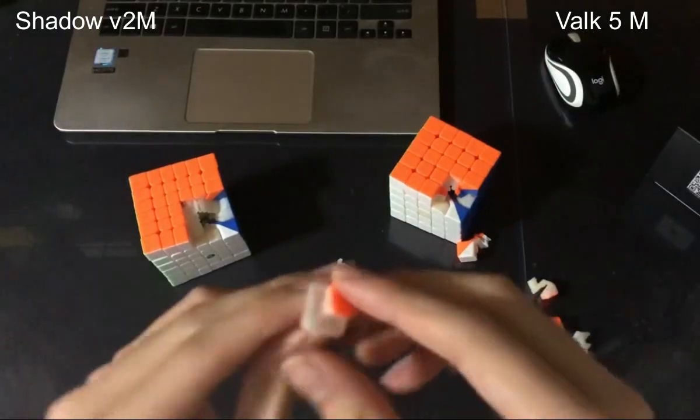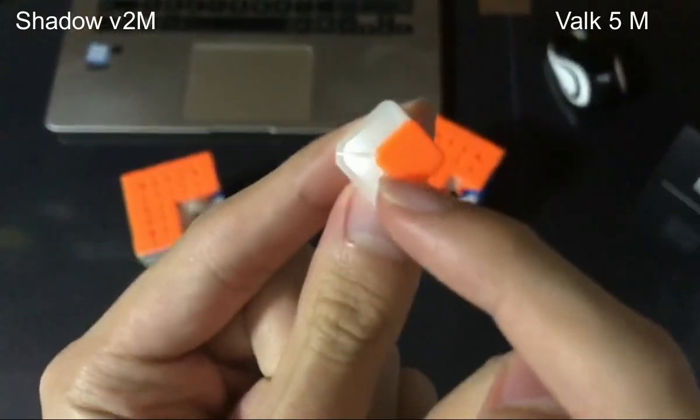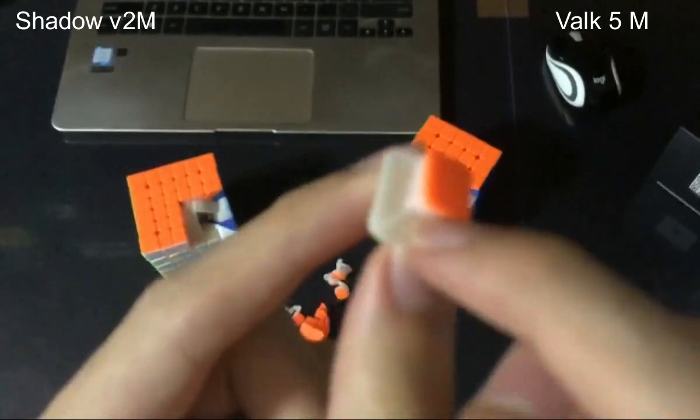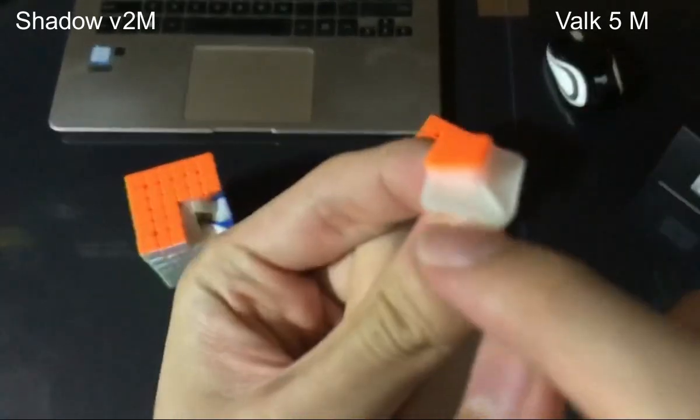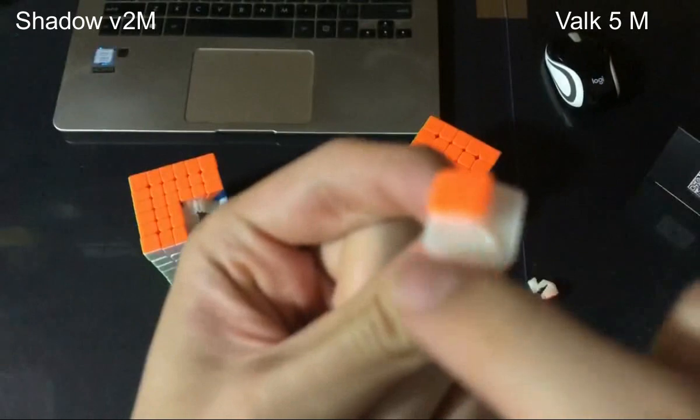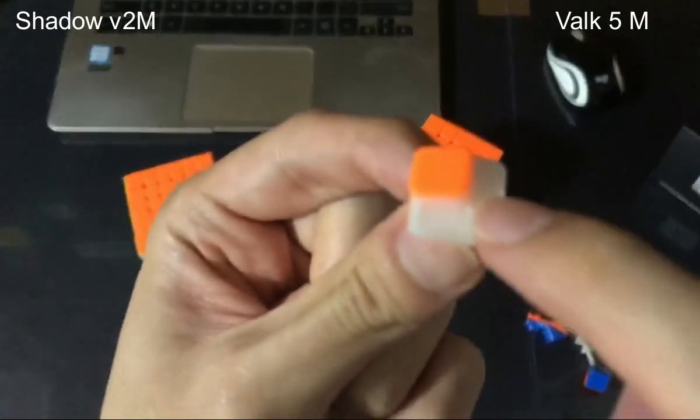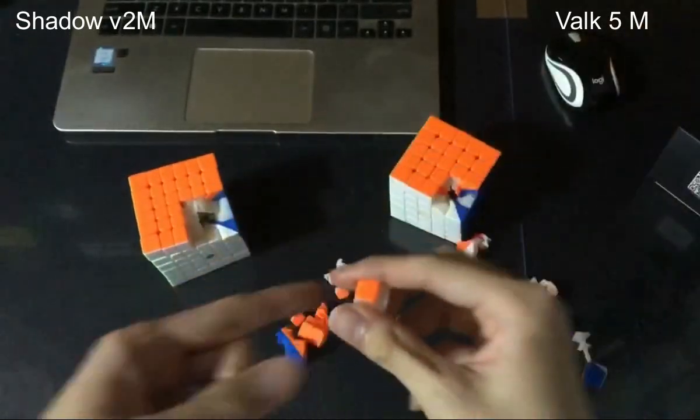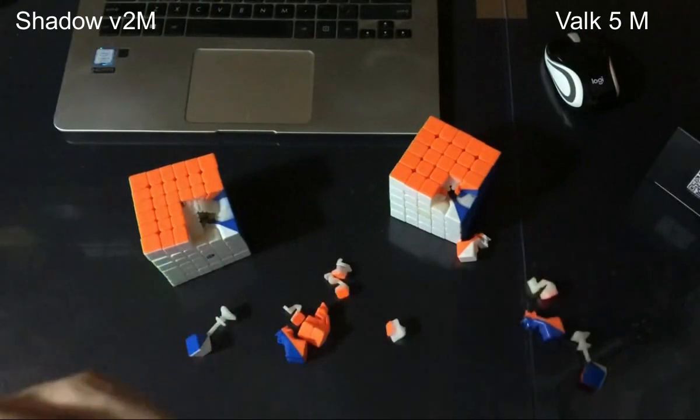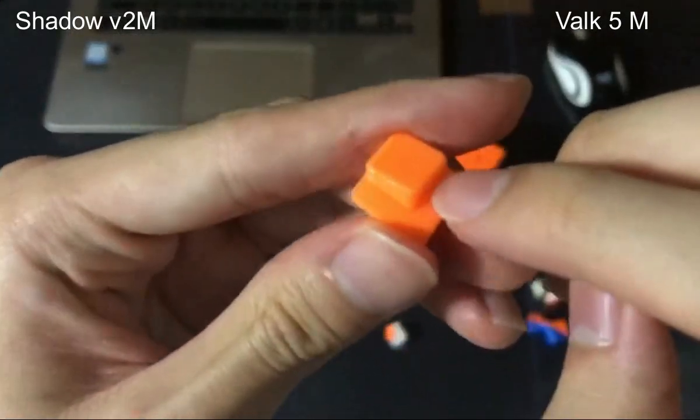And one other notable thing about the Shadow V2 is this particular piece, because it's really hollow and empty. You can really see that the top surface is actually hollow and empty. You can just see a few ribs on the top, whereas if you were to compare it with something like the Aoshi GTS, this entire piece here is actually filled up.